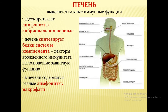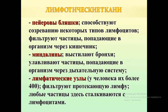Печень — это прежде всего фильтр от всех бактерий и патогенов. Печень также синтезирует белки иммунной системы, такие как белки комплемента. Лимфатические скопления в желудочно-кишечном тракте называют пейровыми бляшками. Здесь встречаются патогенные микроорганизмы с защитной реакцией организма. Фильтруются патогенные частицы, попавшие через кишечник.